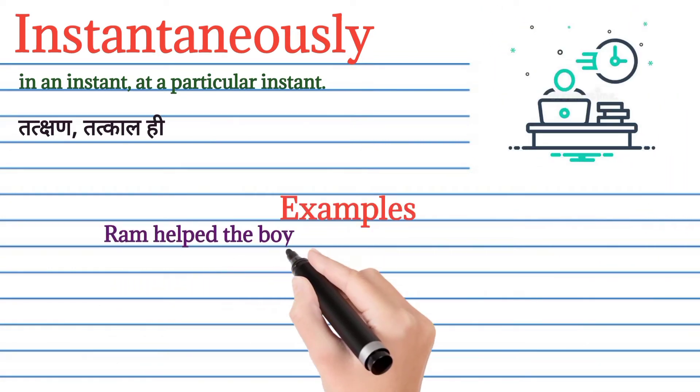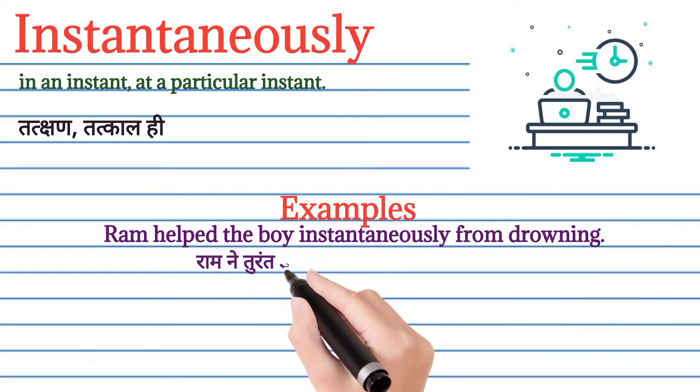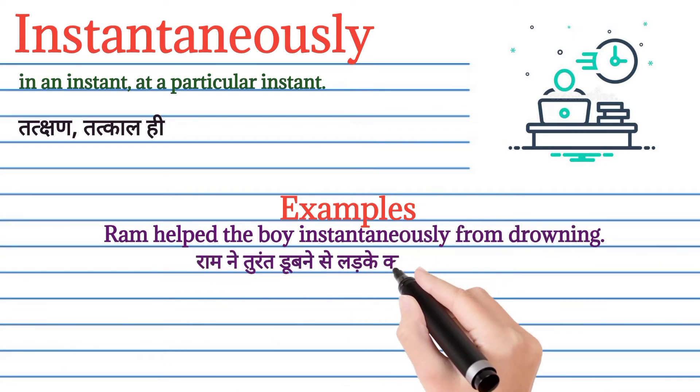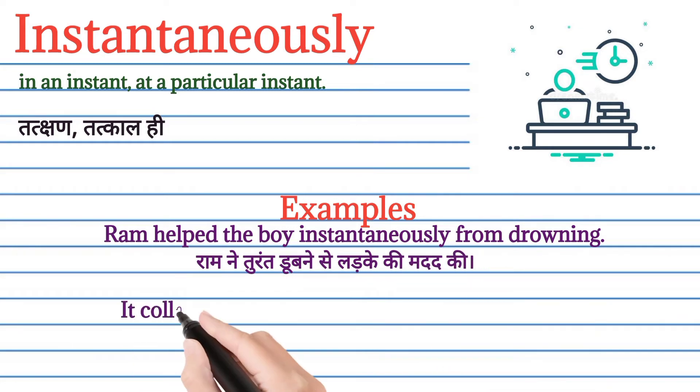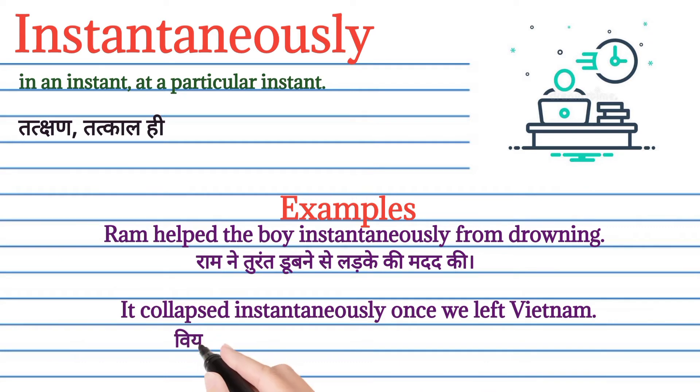Instantaneously ko lhe kar examples se sentence mein achha se samaj lete hai. Ram helped the boy instantaneously from drowning. Ram ne turant dhugne se lardke ki madad ki. It collapsed instantaneously once we left Vietnam. Vietnam se baahar nikaltay hi yeh turant dhugaya.